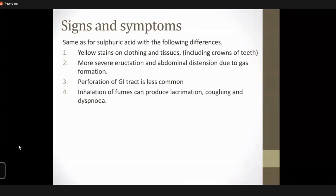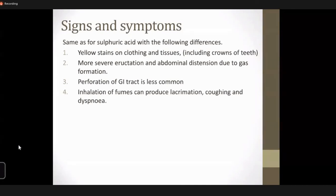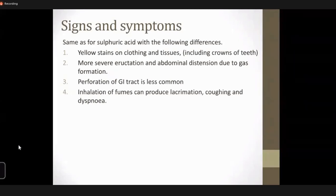While sulfuric acid gives blackish-brown corroded skin, in nitric acid there will be yellow staining on the clothes and tissues, including the mucous membrane, lips, and tongue — everything turns whitish and later yellow. This is mainly by the action of the xanthoproteic reaction — whenever concentrated nitric acid comes in contact with organic matter, it produces picric acid, which is responsible for giving the yellowish-orange tinge to the skin, mucous membrane, and teeth.